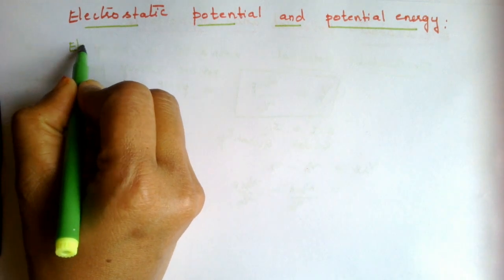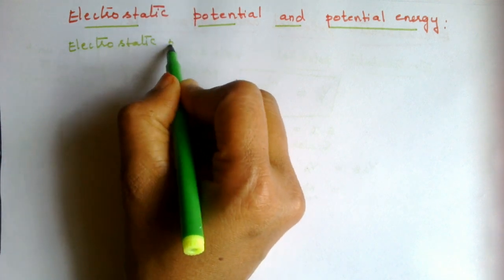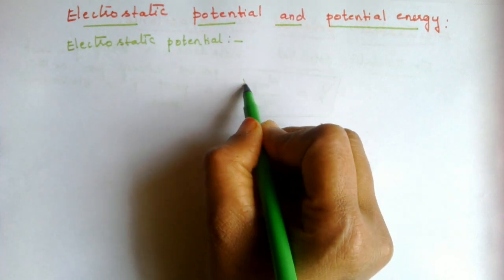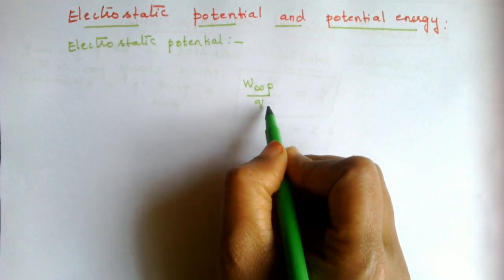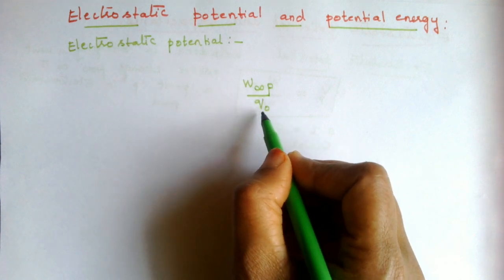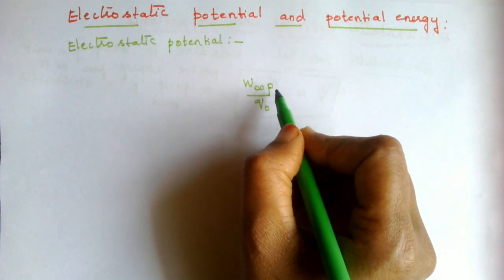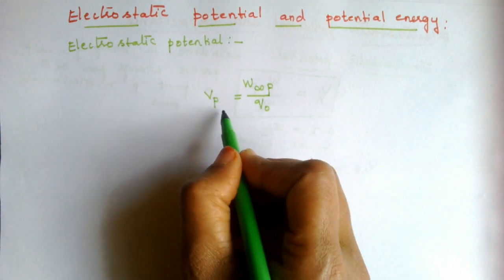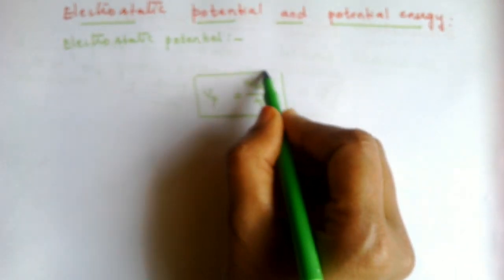We define electrostatic potential as the amount of work done W in bringing a unit positive charge Q₀ from infinity to a point P in an electrostatic field. This ratio W divided by Q₀ gives the potential at that particular point. So VP is equal to W_∞P divided by Q₀.